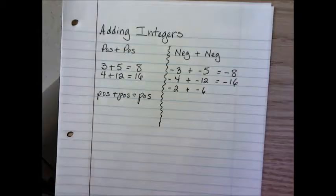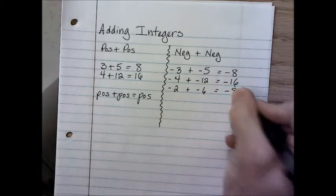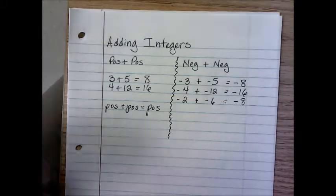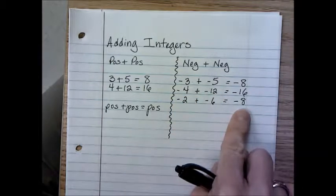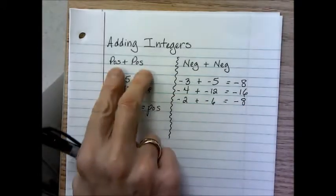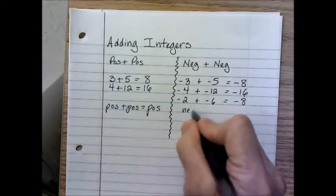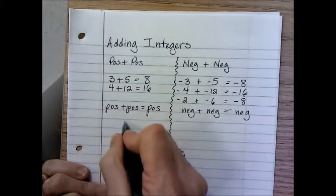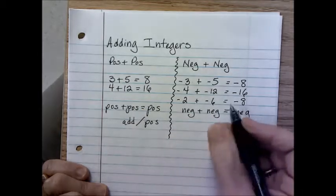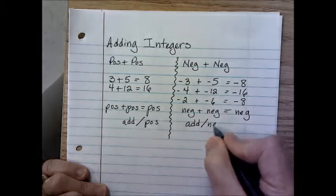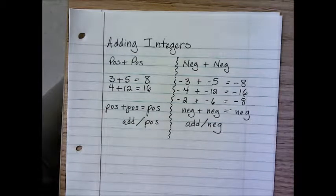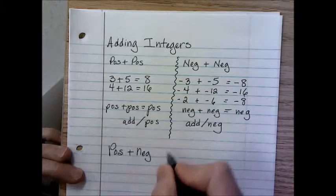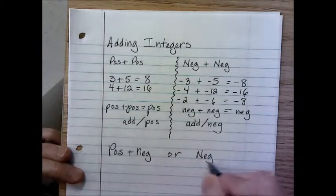If you were playing football and you lost two yards on a play, that would be minus 2, and you lost six yards on another play — altogether you would have lost eight yards, represented by negative 8. All you really did was add your integers and you still had a negative answer. So just like positive plus positive is positive, a negative plus a negative is always going to equal a negative.